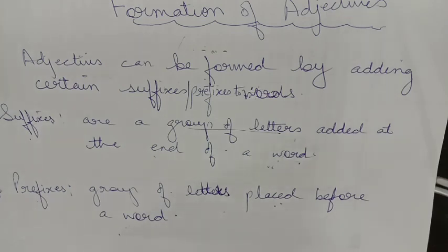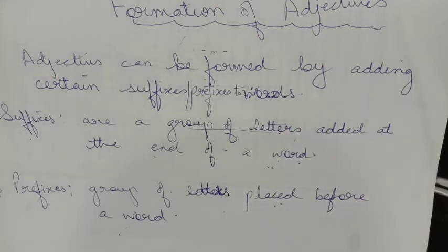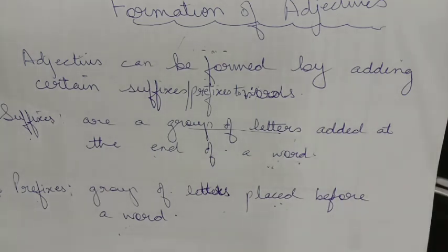Now let's see the formation of adjectives — how adjectives are formed. Adjectives can be formed by adding certain suffixes or prefixes to a word. A suffix is a group of letters added at the end of a word, while a prefix is a group of letters added at the beginning of a word. So just by simply adding a suffix or a prefix to a word, you can form an adjective.